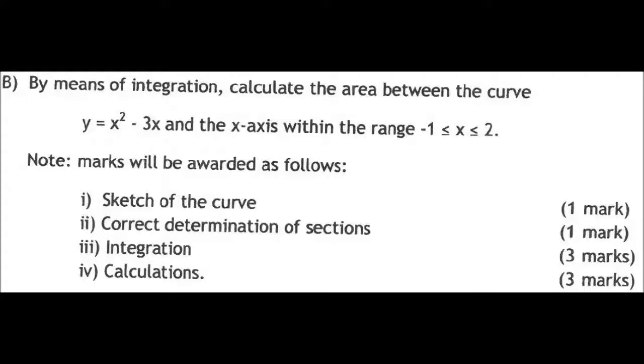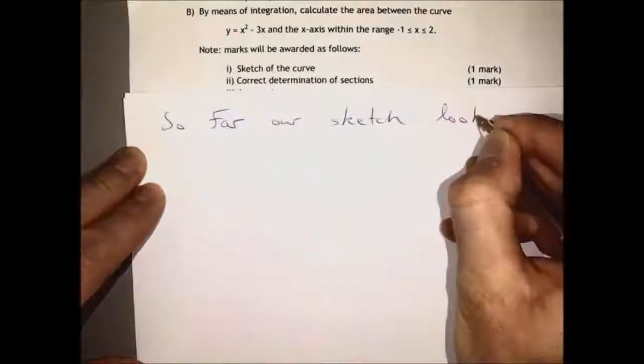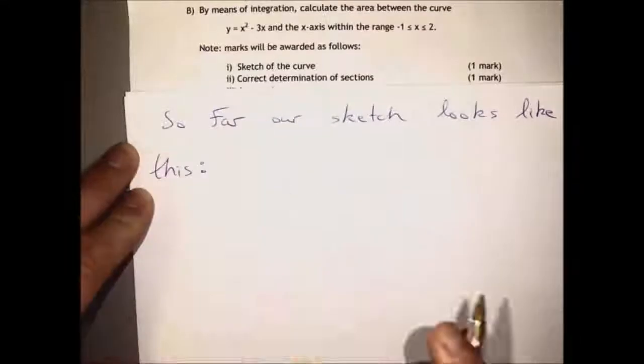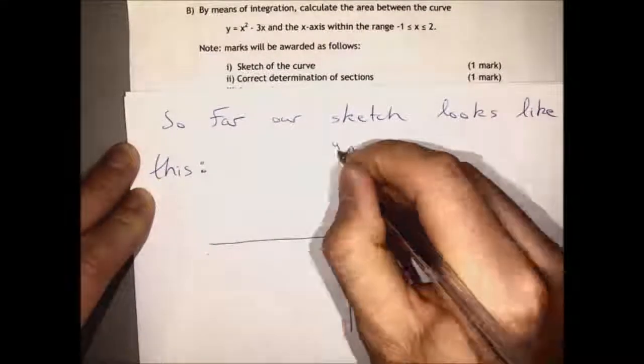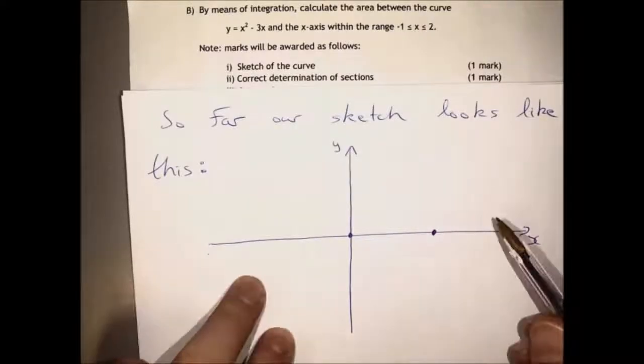Here we need to determine the correct sections for integration, so we will have a look back at our sketch. And we've already worked out that it crossed the x-axis at two points: zero comma zero and three comma zero.